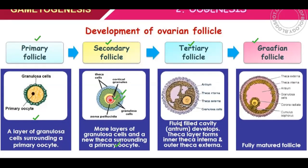In the tertiary follicle in the ovary, a cavity develops and it starts to be fluid-filled. The theca layer forms with inner and outer parts — theca interna and theca externa. The antrum is in the tertiary follicle. The mature follicle is called the Graafian follicle, in which the antrum is fully developed, theca interna and externa are fully developed, and granulosa cells take a distinct layer.